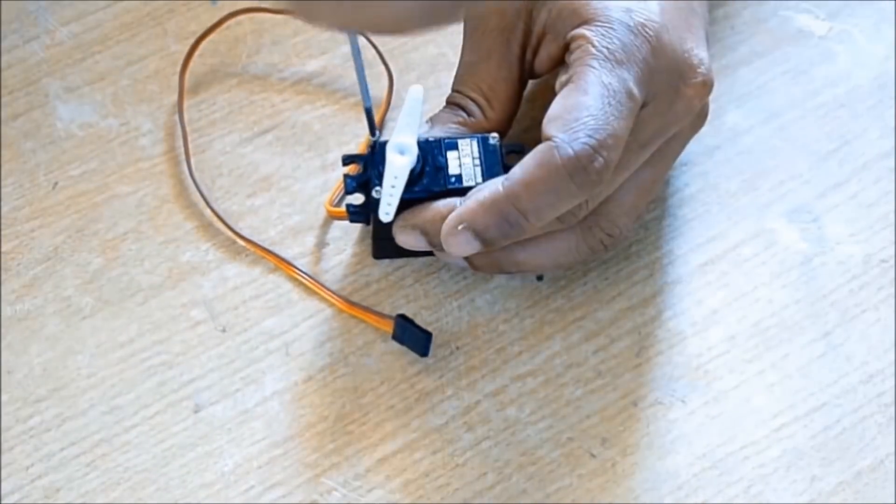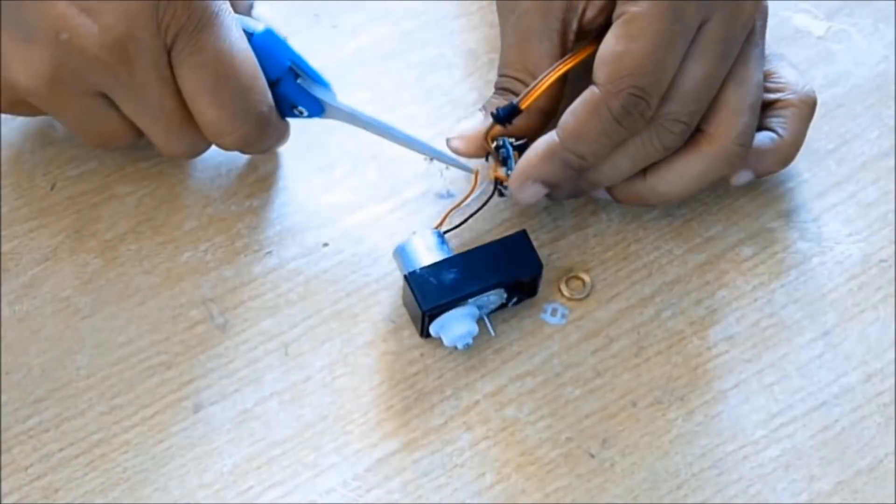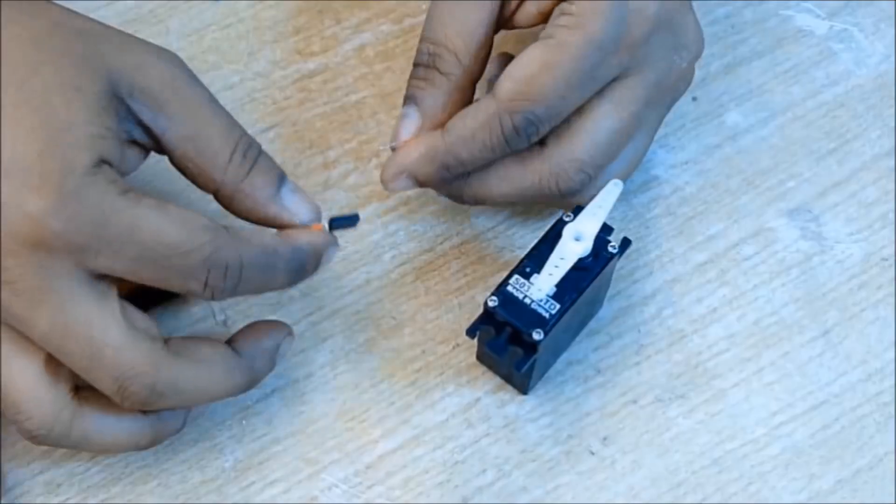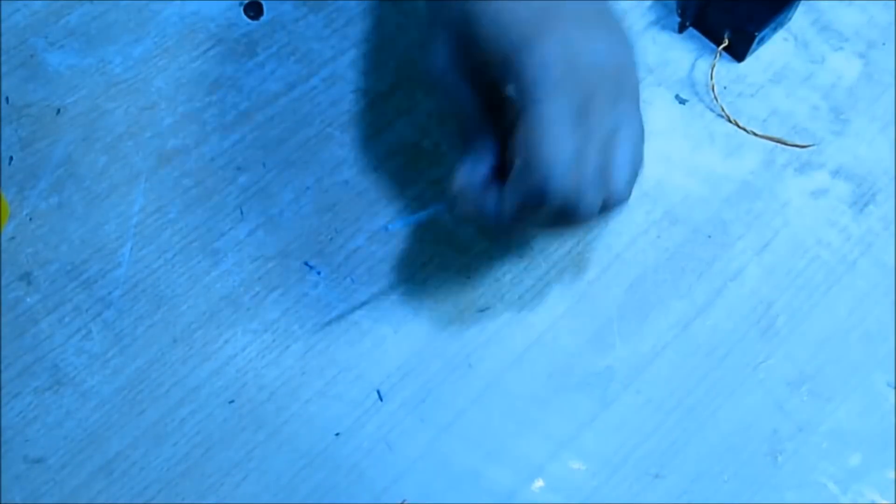For this you need an ordinary servo motor. Open it and disconnect the control circuit. You'll get two wires from the motor. Just take it out and power it. You can see a free rotation like this.